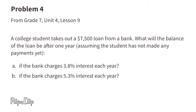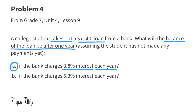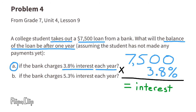Problem number four from seventh grade Unit 4, Lesson 9: a college student takes out a $7,500 loan from a bank. What will the balance of the loan be after one year, assuming the student hasn't made any payments yet? Part A: if the bank charges 3.8% interest per year. To figure this out, we need to multiply 7,500 times 3.8%.